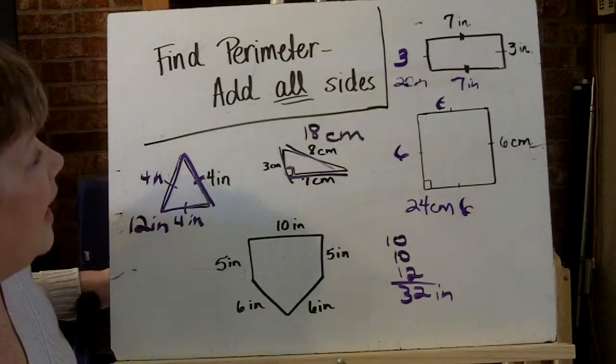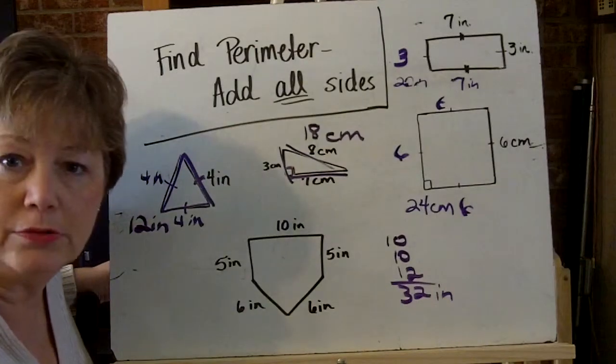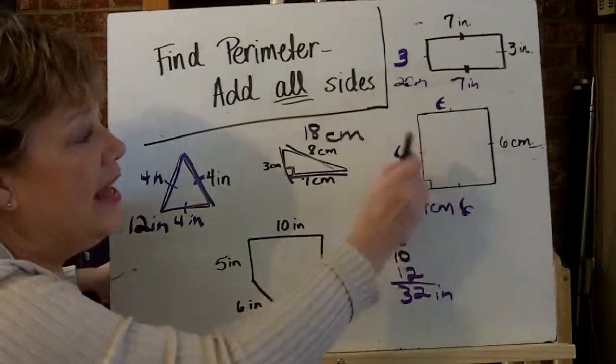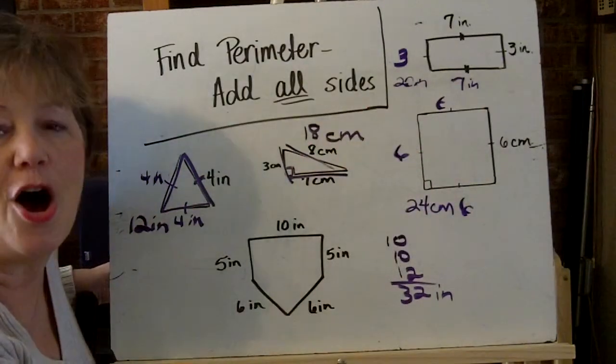Again, when you are finding perimeter, that outside edge, you add all the sides.